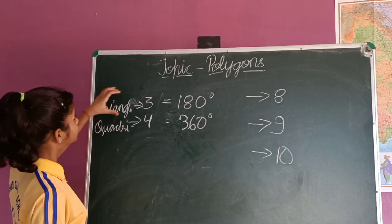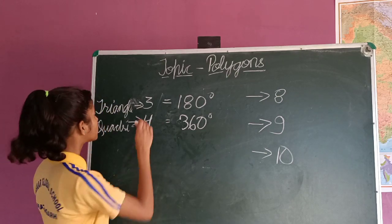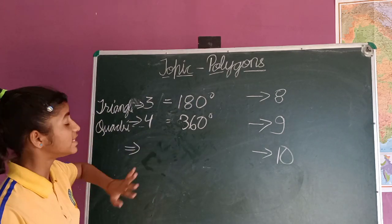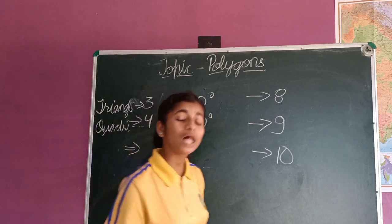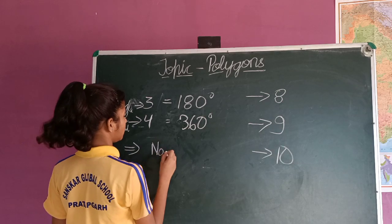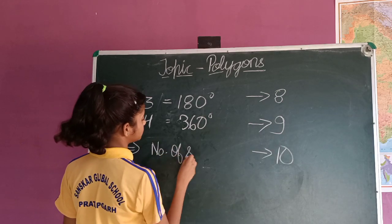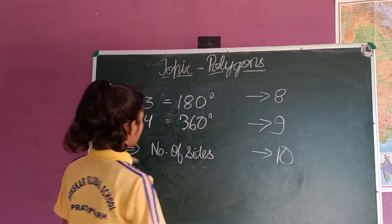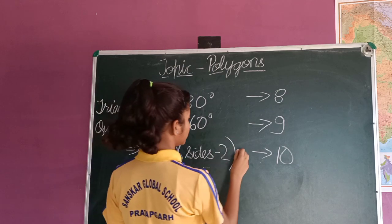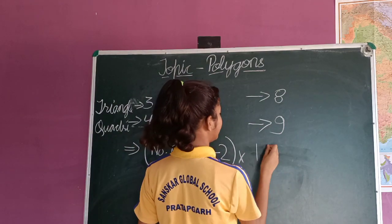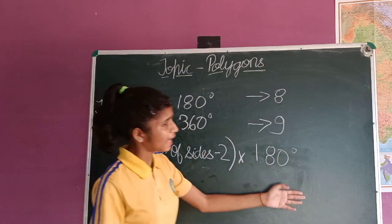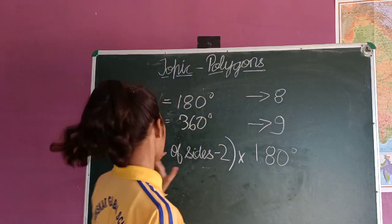The formula applies to triangle, quadrilateral, and all other polygons. If you have to find the sum of all the angles of any polygon, the formula is: number of sides minus 2, into 180 degrees. If we apply this formula on any shape, we will get the answer.